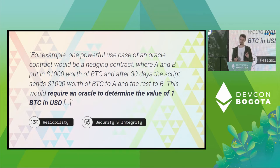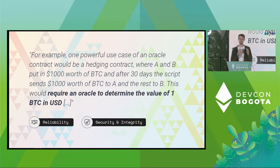If we think about the properties that this implies we need our Oracle to have, two things stand out. First, we need reliability — we need to make sure that when the 30 days are up, the Oracle supplies the exchange rate between Bitcoin and dollars so we can fairly settle the hedging contract.